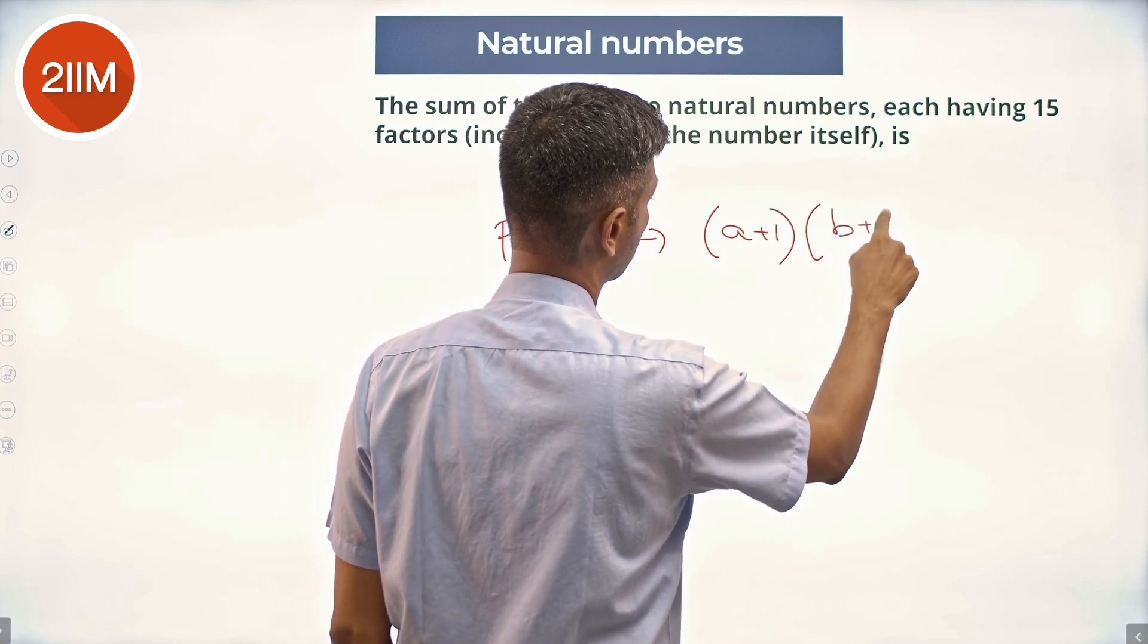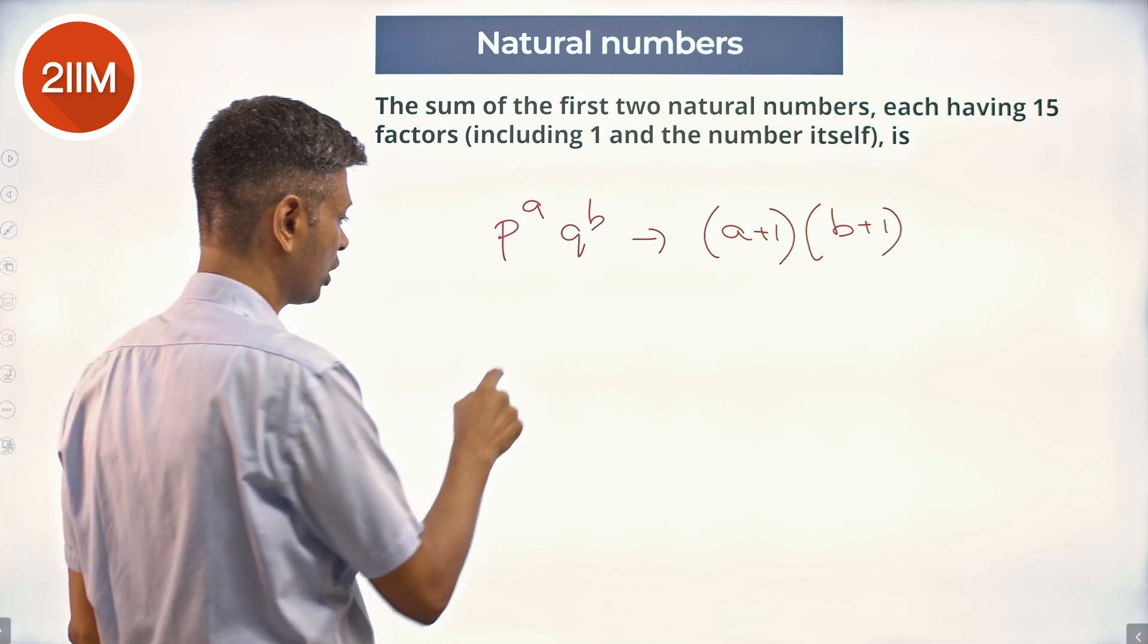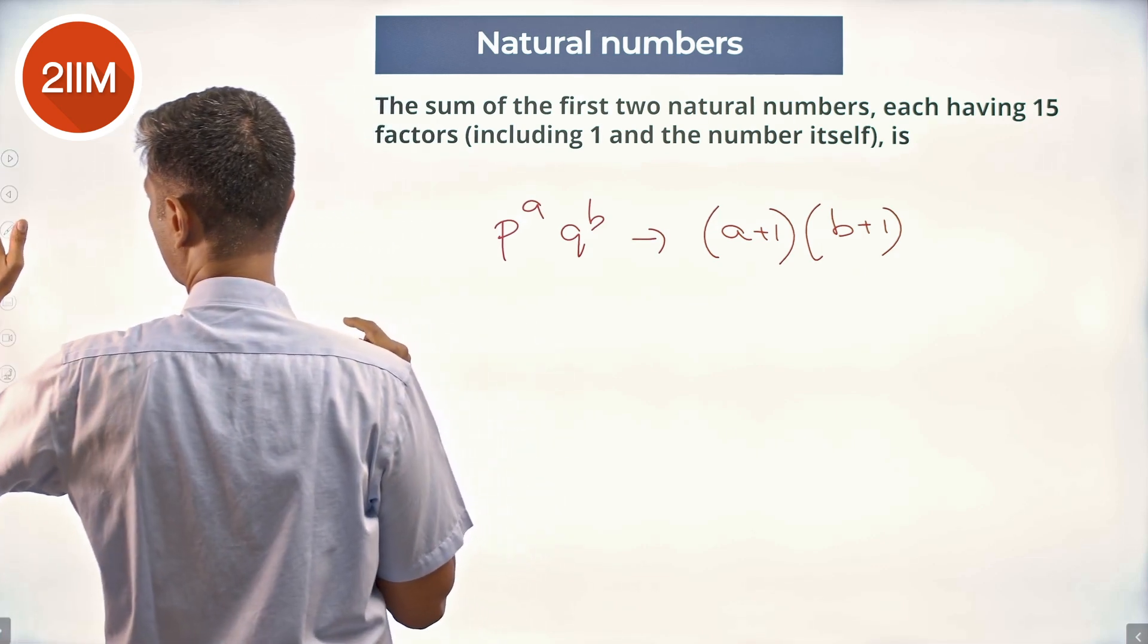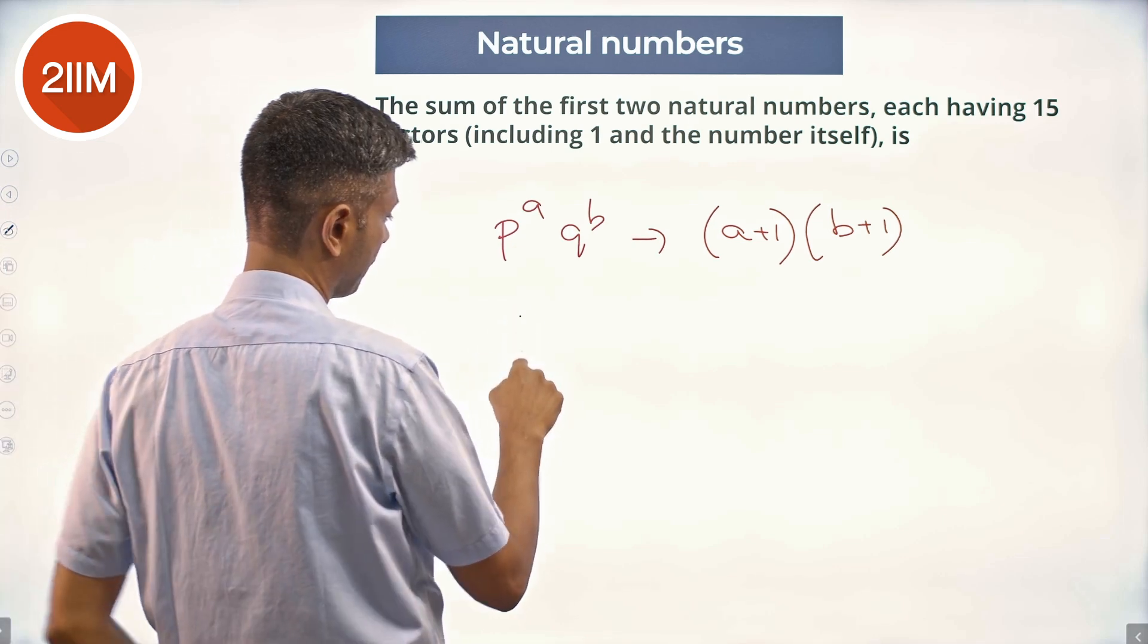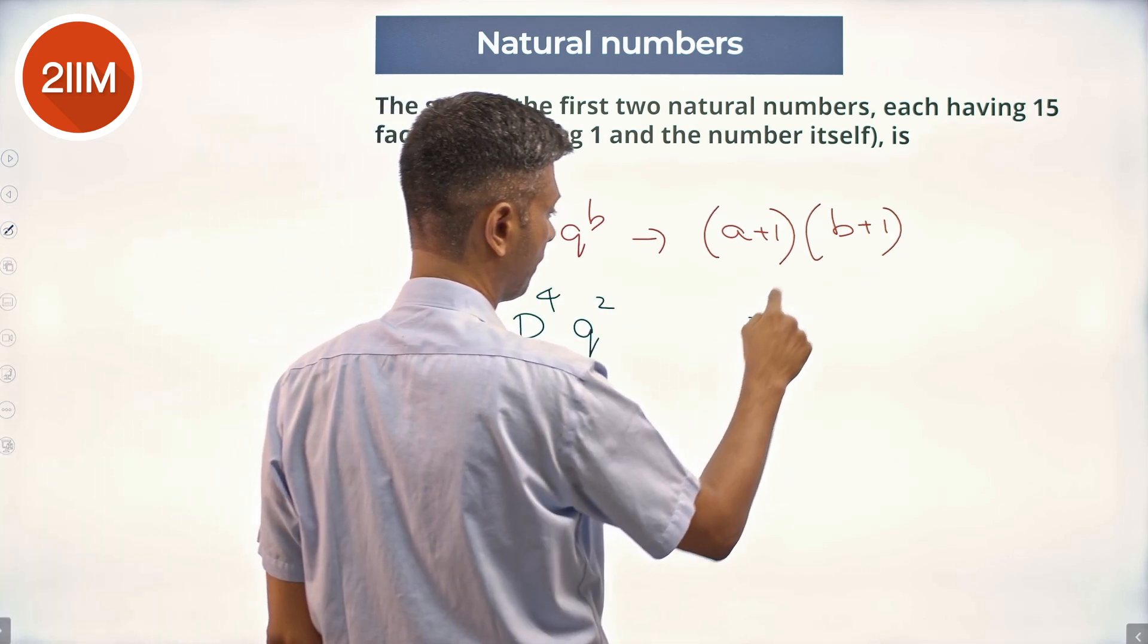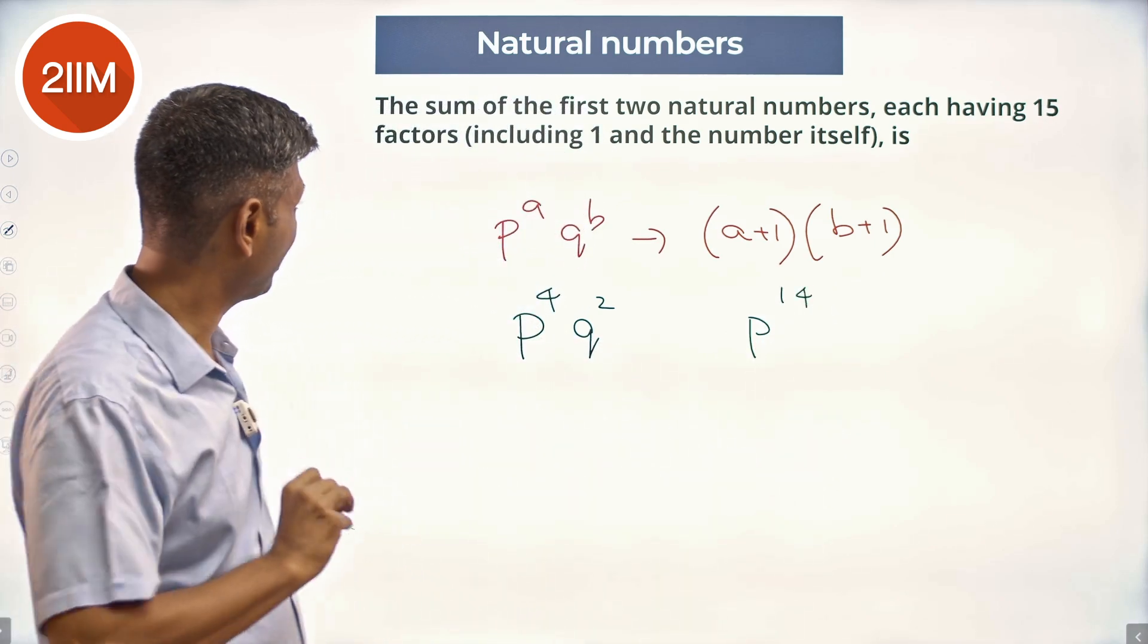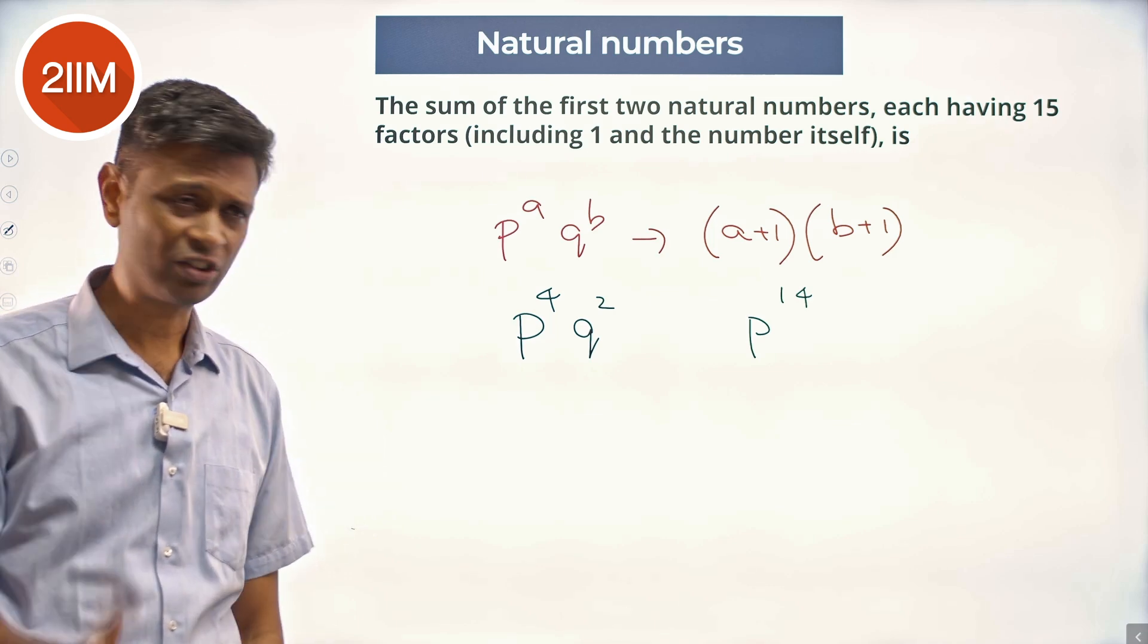15 can be written as 3 into 5 or just 15 alone. We are looking for a number of the form p power 4 into q square or number of the form p power 14. First two natural numbers each having 15 factors including one and the number itself.